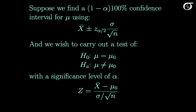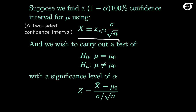Suppose we find a (1-alpha) times 100% confidence interval for mu using this formula, which would be appropriate if we were sampling from a normally distributed population where sigma is known. And suppose we wish to carry out a test of the null hypothesis that mu is equal to mu0, against a two-sided alternative at a significance level of alpha.